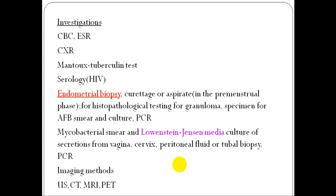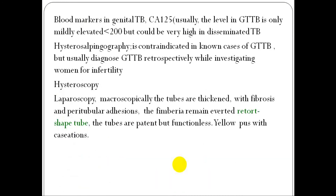Mycobacterium smear using Löwenstein-Jensen culture medium for secretions from the vagina, cervix, peritoneal fluid, or tuberculous biopsy. PCR and imaging methods are used to locate another or primary source such as the lungs. Ultrasound, CT, and MRI along with other investigations are needed to reach the diagnosis. Blood markers for genital TB differ from patient to patient.